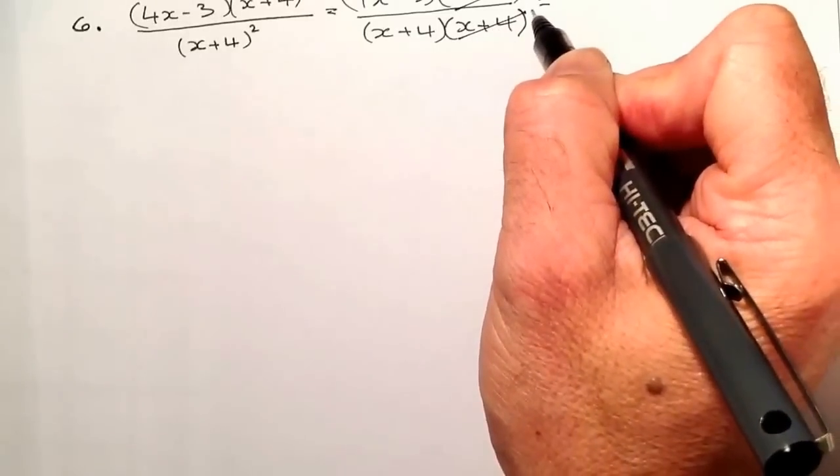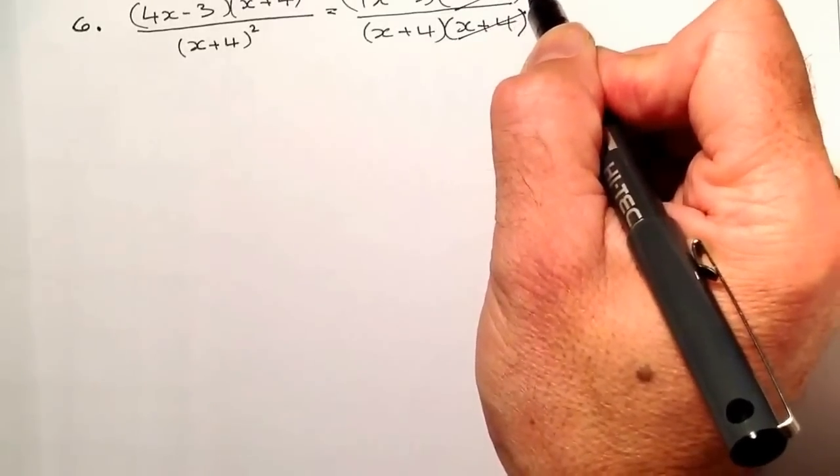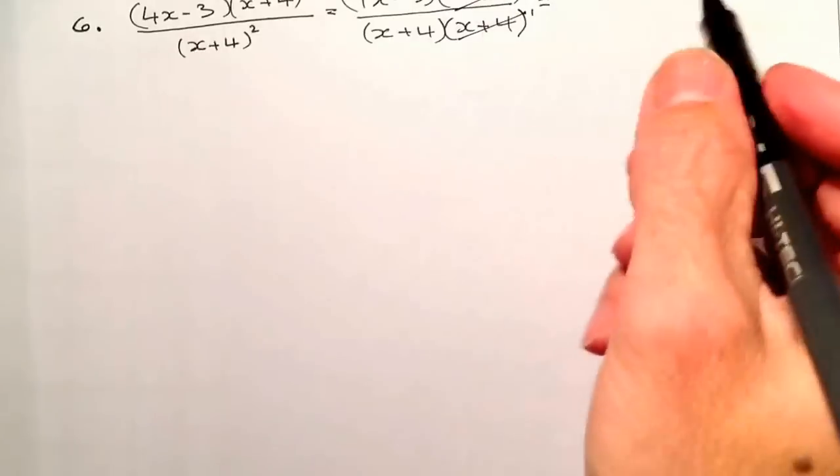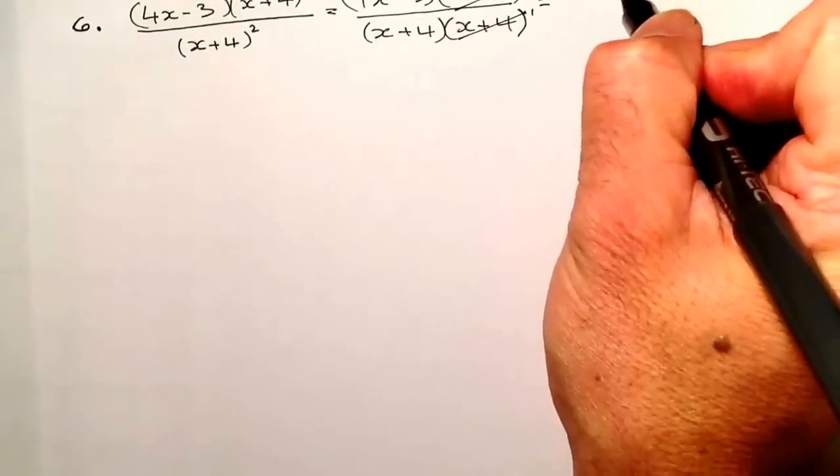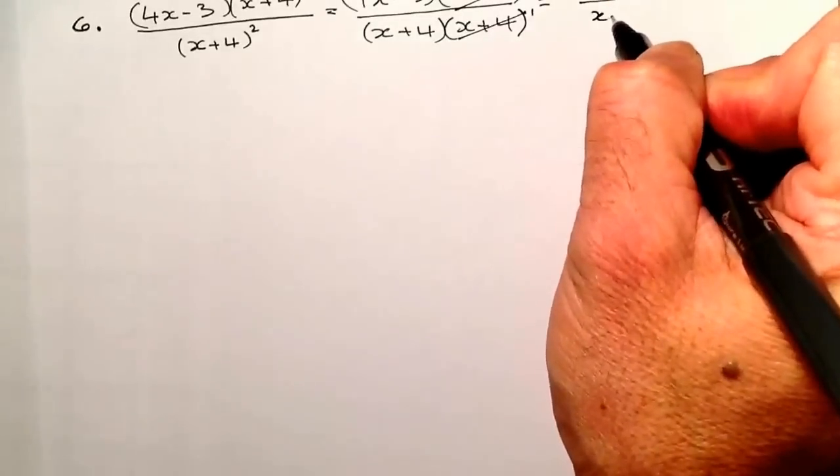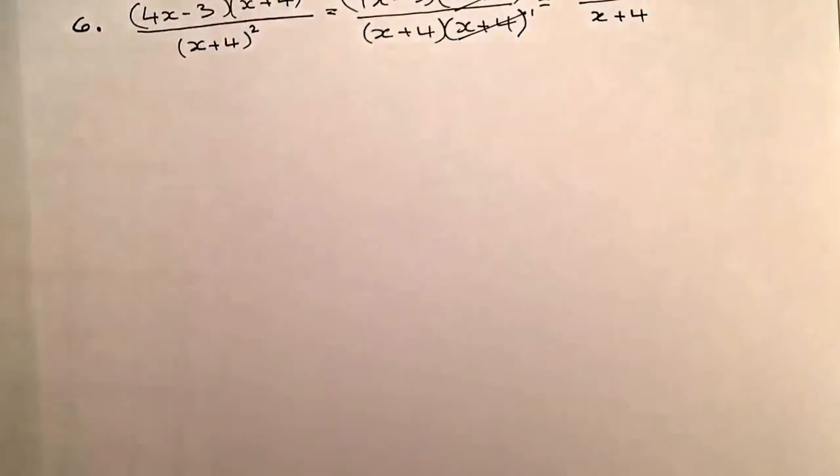Really what I'm doing when I do that, I'm dividing the bottom by x plus 4, and that'll be once. x plus 4 on the top would be once. And what I've got left on the top is my final answer, and the x plus 4 on the bottom. And that completes the question.